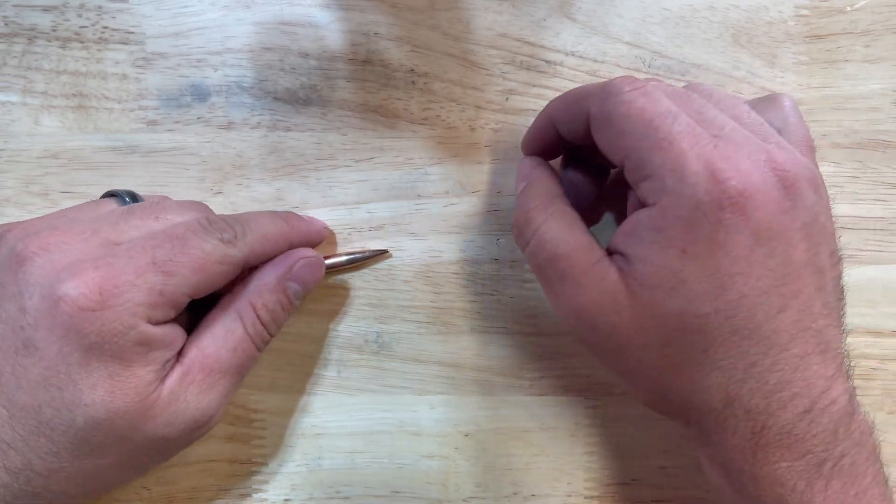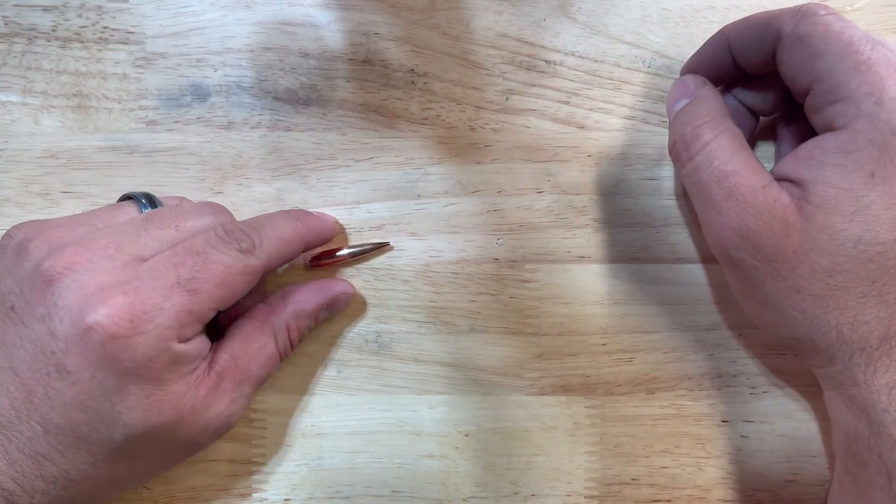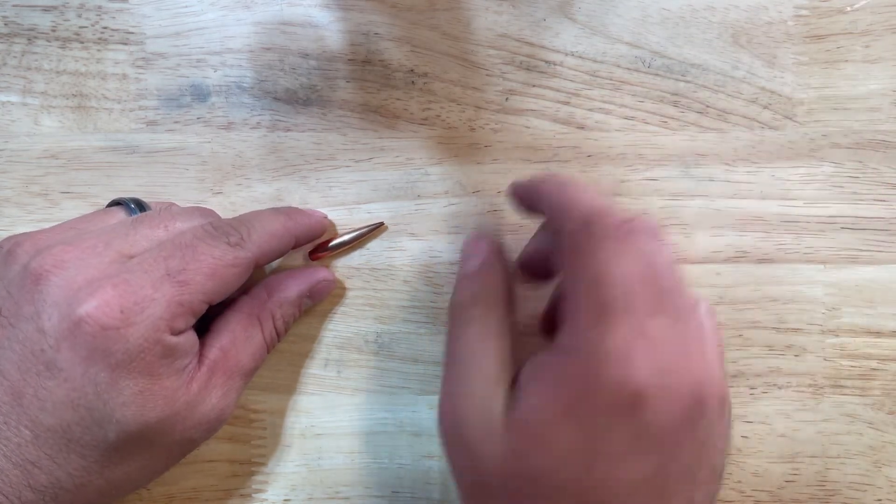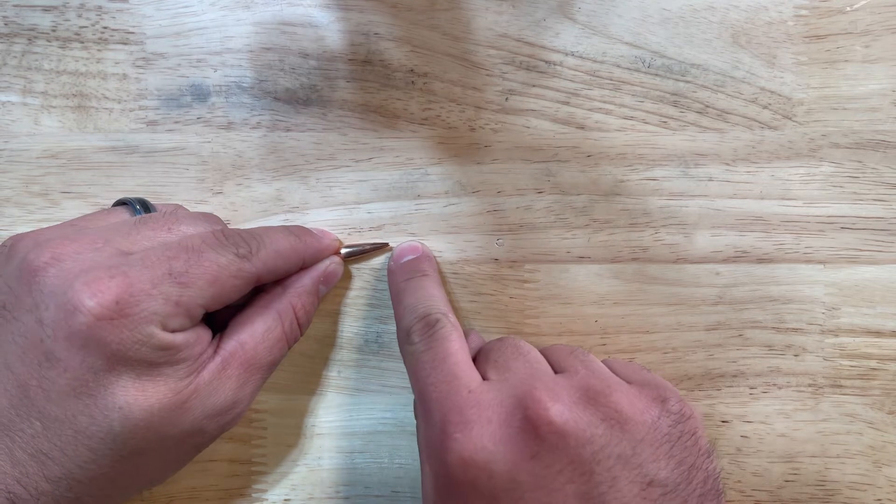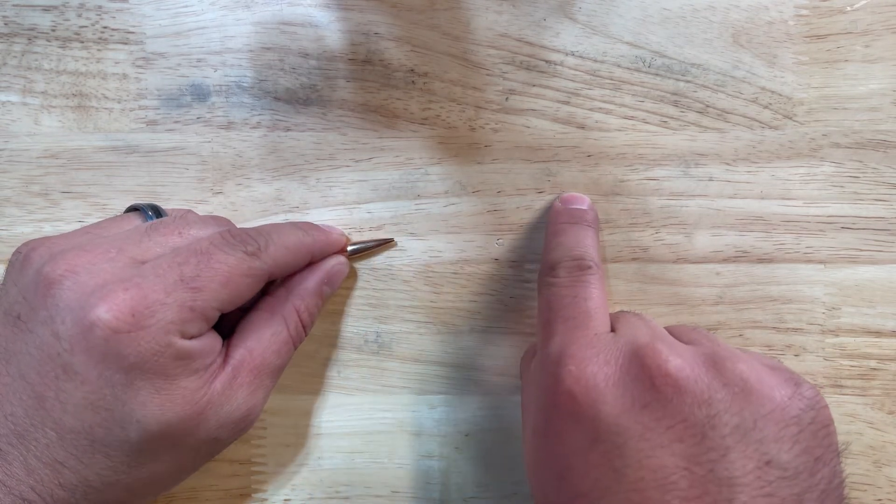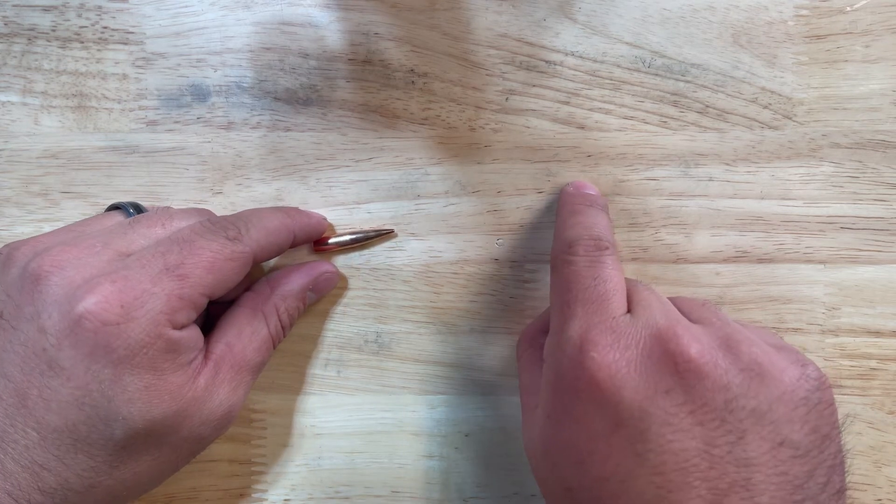So when a bullet is spinning, if you've got a right hand twist, you've got that bullet spinning this direction. So using the right hand rule, we'll curl the thumb. And essentially, the angular momentum vector is going to be pointing straight this way out the nose of the bullet.